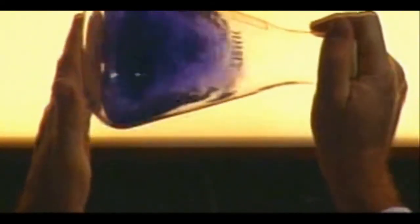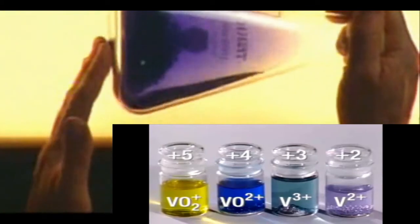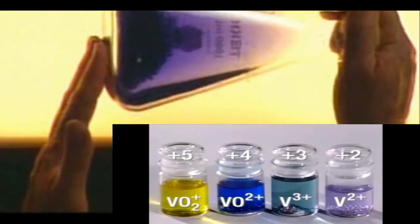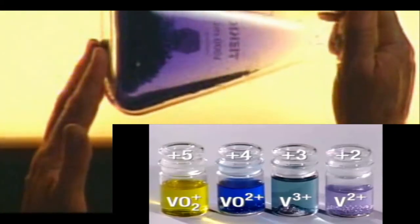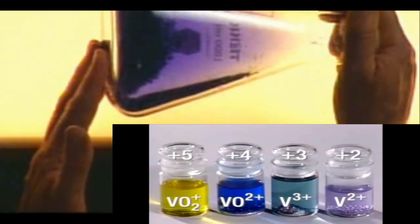After vigorous shaking, we see that the vanadium has changed from the 3 positive in the blue to the 2 positive, which is the violet color.